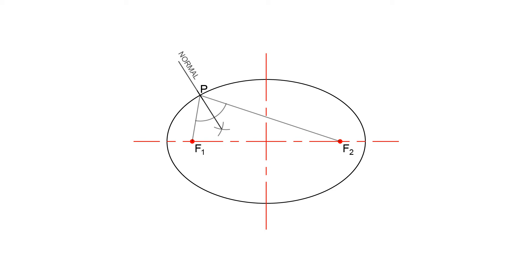The line bisecting the angle is actually the normal that we are after. Just extend it a little bit.